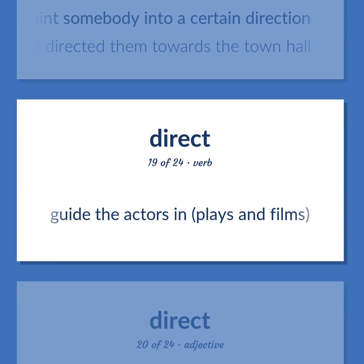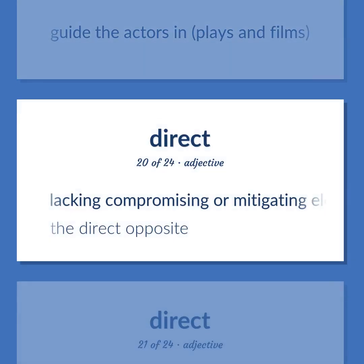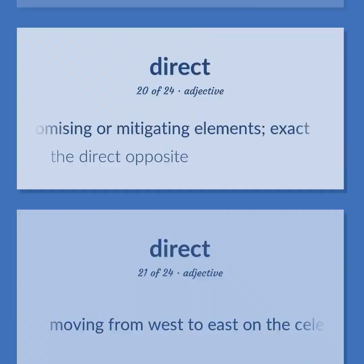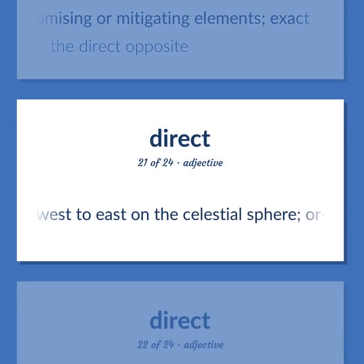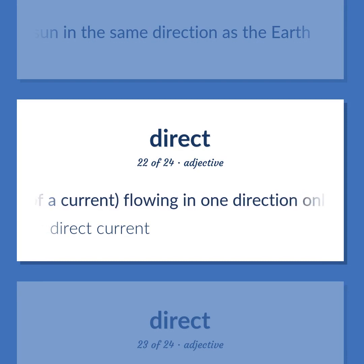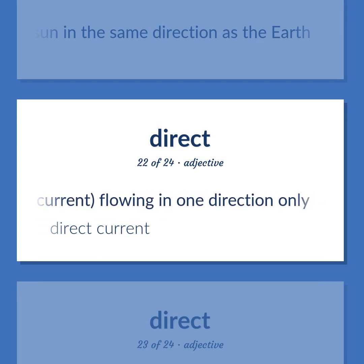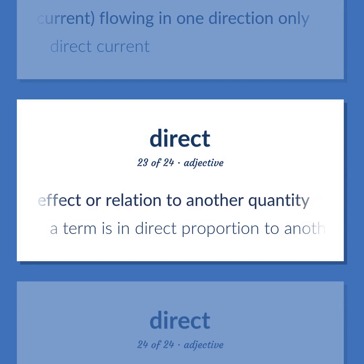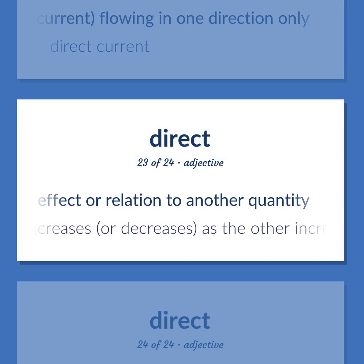Guide the actors in plays and films. Lacking compromising or mitigating elements; exact. The direct opposite. Moving from west to east on the celestial sphere, or for planets, around the sun in the same direction as the earth. Of a current, flowing in one direction only. Direct current. Similar in nature or effect or relation to another quantity. A term is in direct proportion to another term if it increases or decreases as the other increases or decreases. Straightforward in means or manner or behavior or language or action. A direct question.